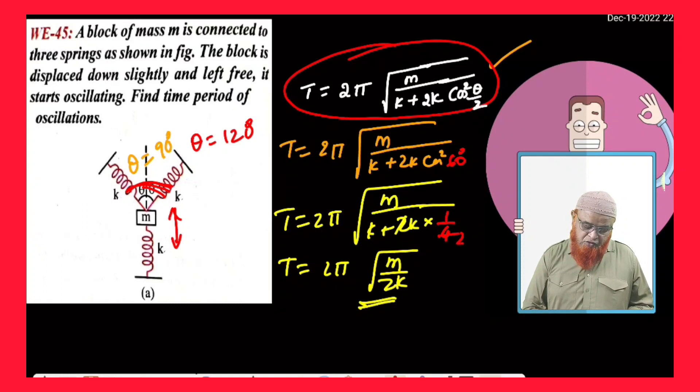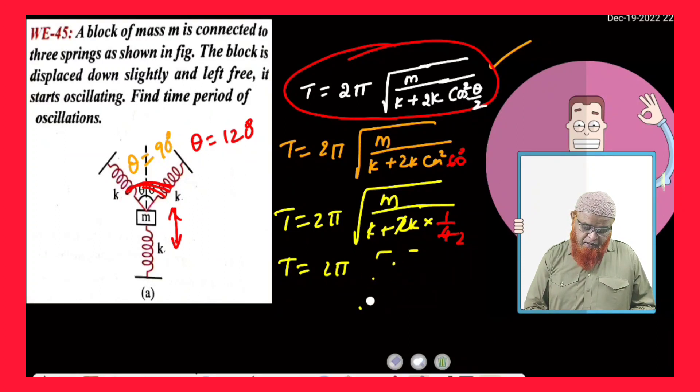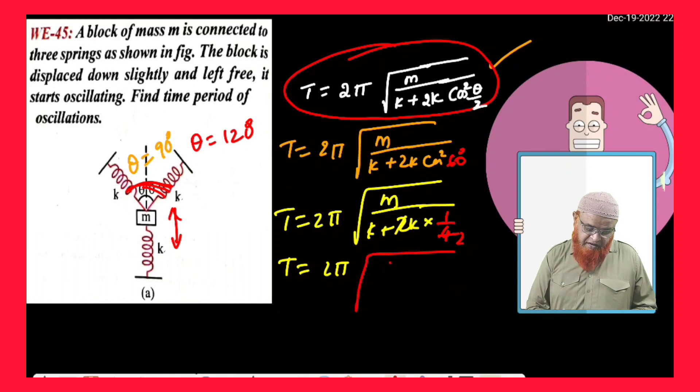So, you will be getting 1 by 4. So, 2 1s, 2 2s. Therefore, how much will you be getting? K plus k by 2 is nothing but 3k by 2. So, you will be getting a different answer here if you consider this. You will be getting square root of M by k plus k by 2, which is 3k by 2.